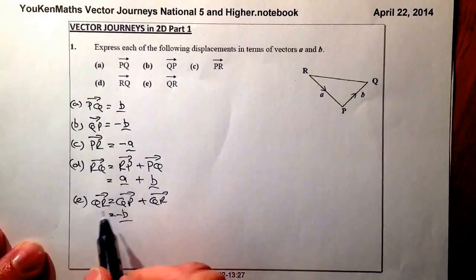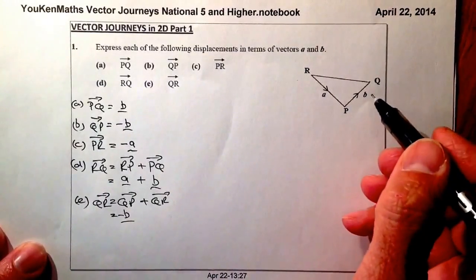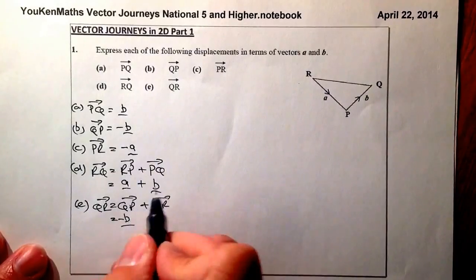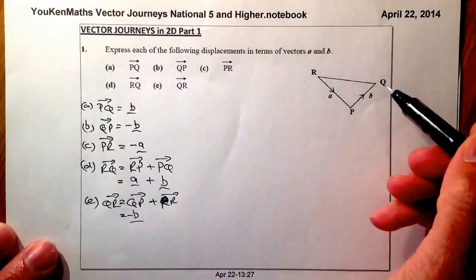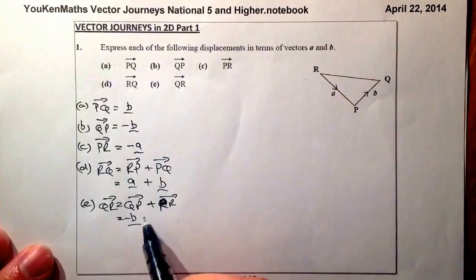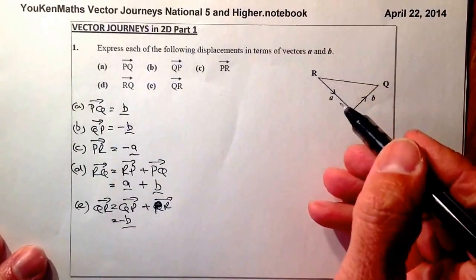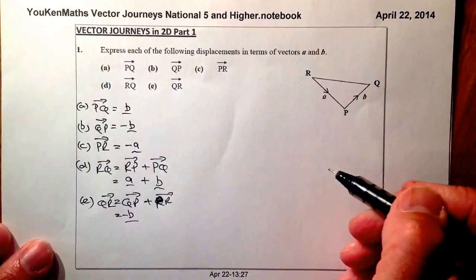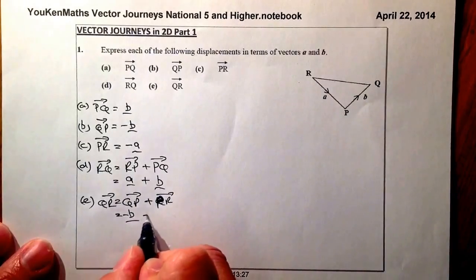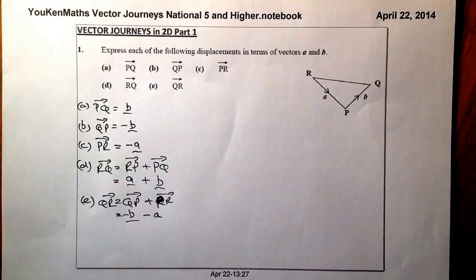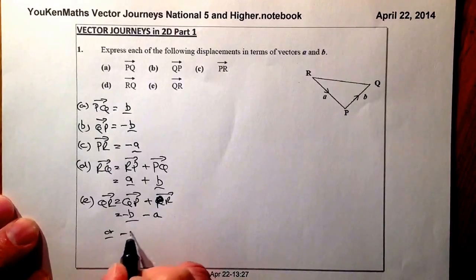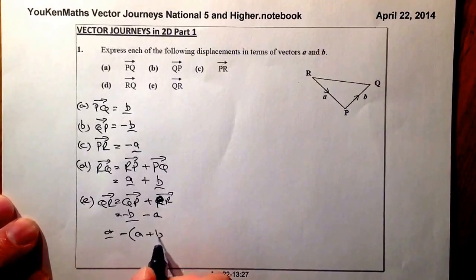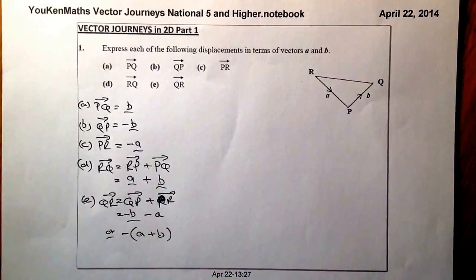And also from Q to R, whoops, that's not right, that should be P that's in there. So that's Q to P and P to R that we're going. So P to R is in the opposite direction of A, so that's going to be minus A, and that would be the answer there. Or, if I wanted to tidy that up, it would be minus A plus B if I wanted to tidy it. And that's that question complete.